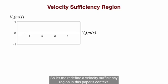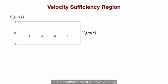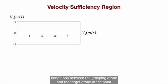So let me redefine a velocity sufficiency region. In this paper's context, it is a combination of relative velocity conditions between the grasping drone and the target drone at the point of impact that yields the highest probability for a successful grasping attempt.